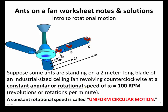Here's the scenario we'll be working on. We've got a big industrial-sized ceiling fan that has a two-meter-long blade from the center all the way out to the edge. We've got three ants on the fan: one is a half a meter from the center, one is one meter from the center — double the first ant — and one is all the way out to the edge at two meters, which is four times the first ant. This ceiling fan will be whirling around at a constant rotational speed of 100 RPM — revolutions per minute.